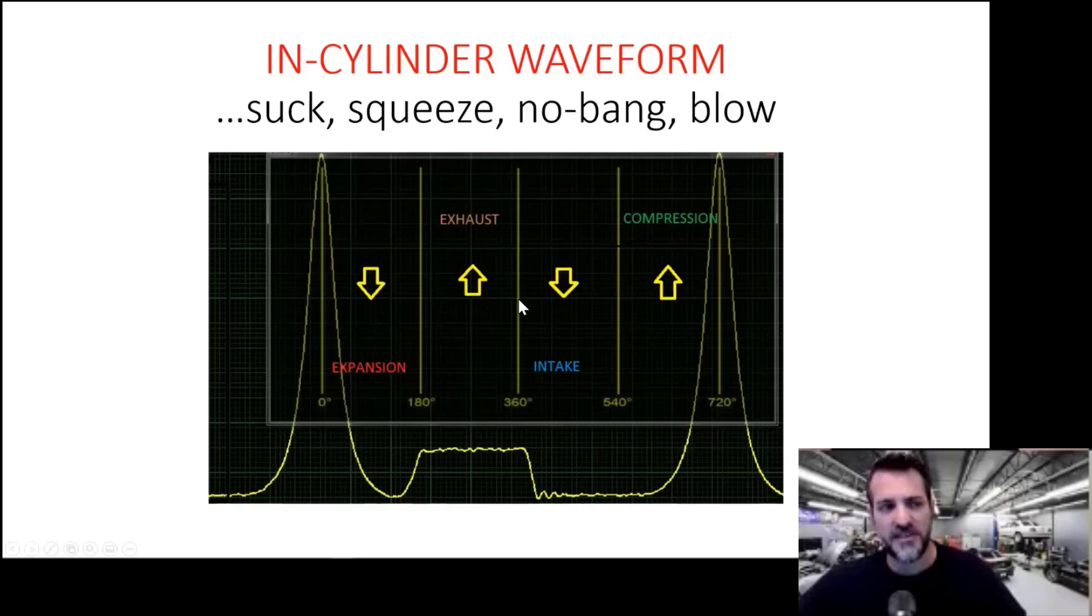Moments later, the piston starts to descend and it continues to draw on the intake manifold and draw air out of the intake manifold. That's why vacuum stays low here. And then we get to bottom dead center, 540. What happens to the piston after the 540 mark? It starts going up. So if this is 540 and this is where the piston is ascending, how come pressure is not ascending here as well? What's still open?